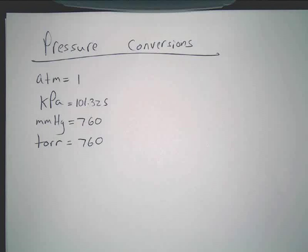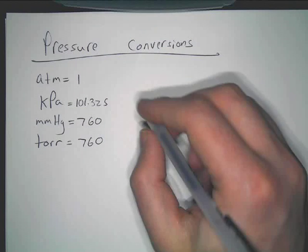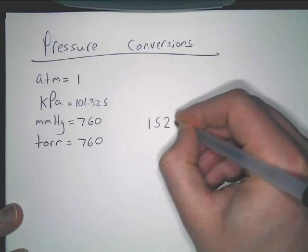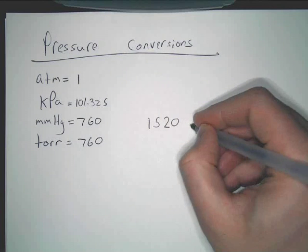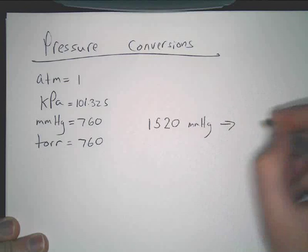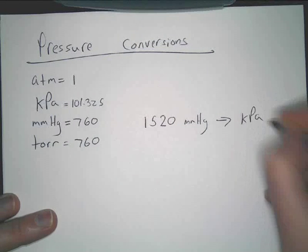So let me give you an example. Let's say you have something simple, like 1520 millimeters of mercury, and we want to convert that to KPA.